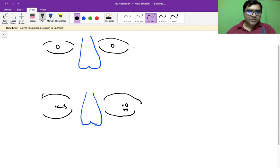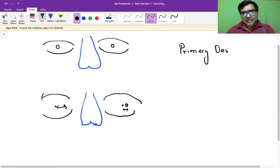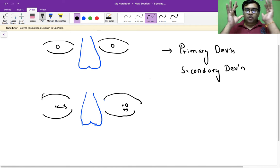Good evening friends, we would study today about two important topics which is primary deviation and secondary deviation, basically in a condition called paralytic squint. So a paralytic squint is a type of incomitant squint.